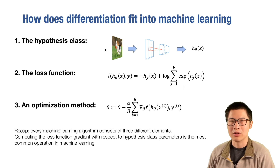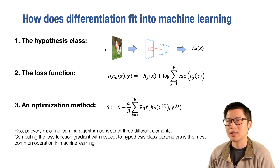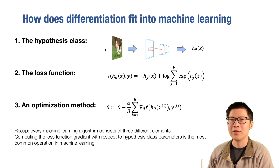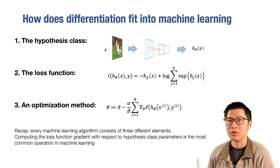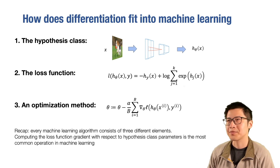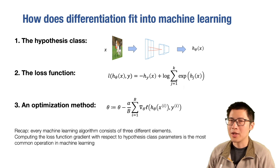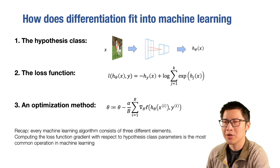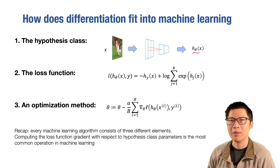In future lectures, we're going to talk about different hypothesis classes like convolutional neural networks, transformers, and generative neural networks — these transform a given input to a prediction. Of course, for a given hypothesis class, there are still several things that are undetermined. Specifically, each hypothesis will be parameterized by a set of parameters theta, and we will need to learn a good theta from training data.